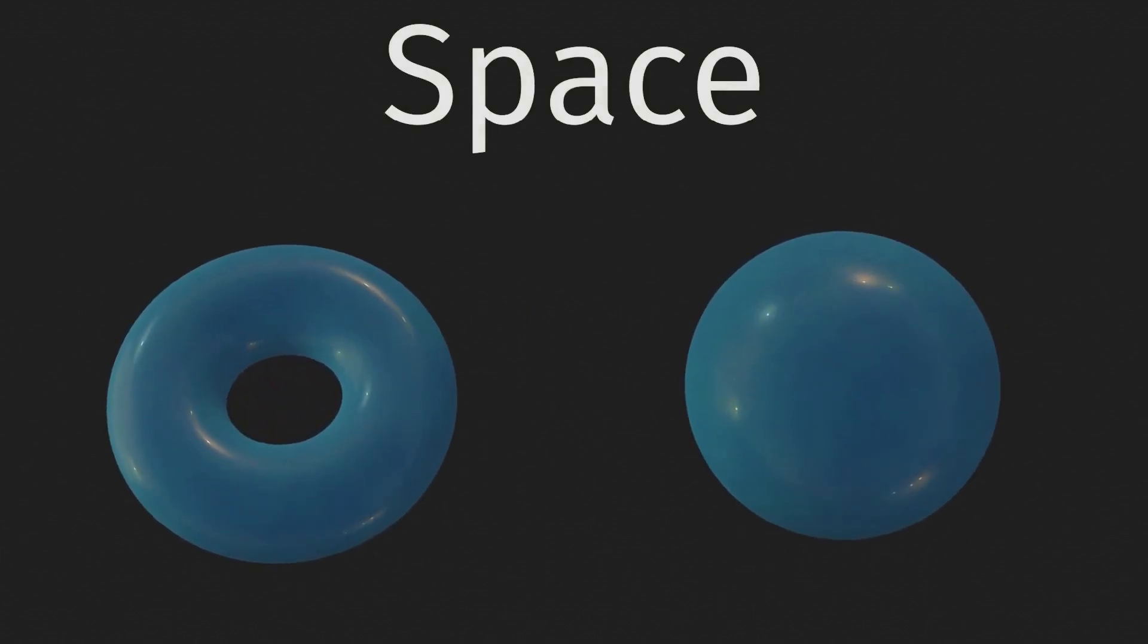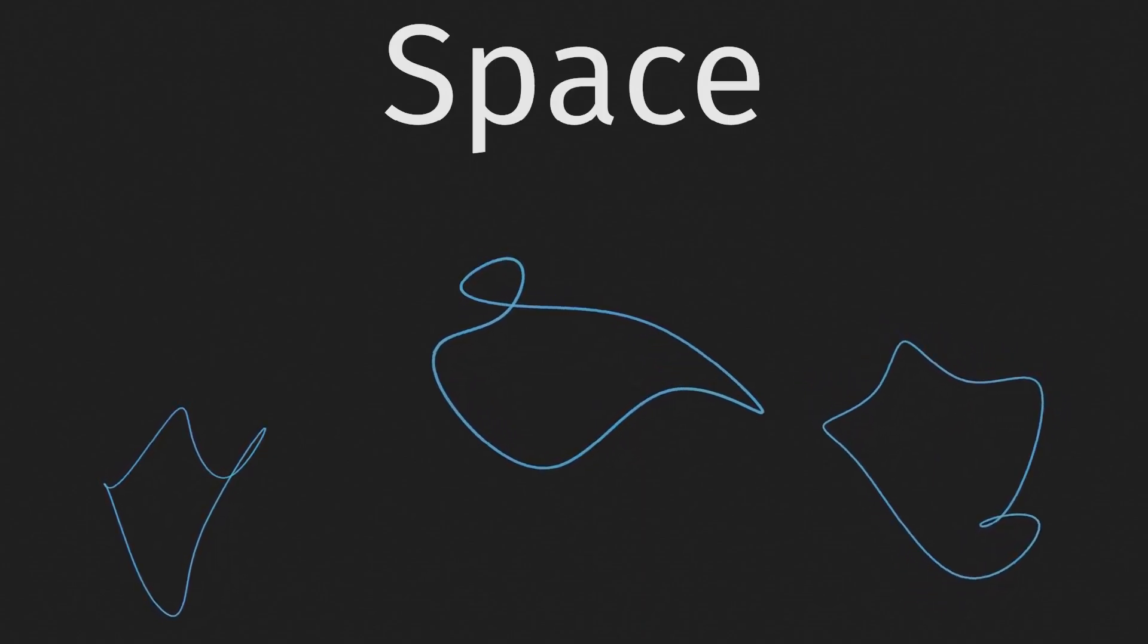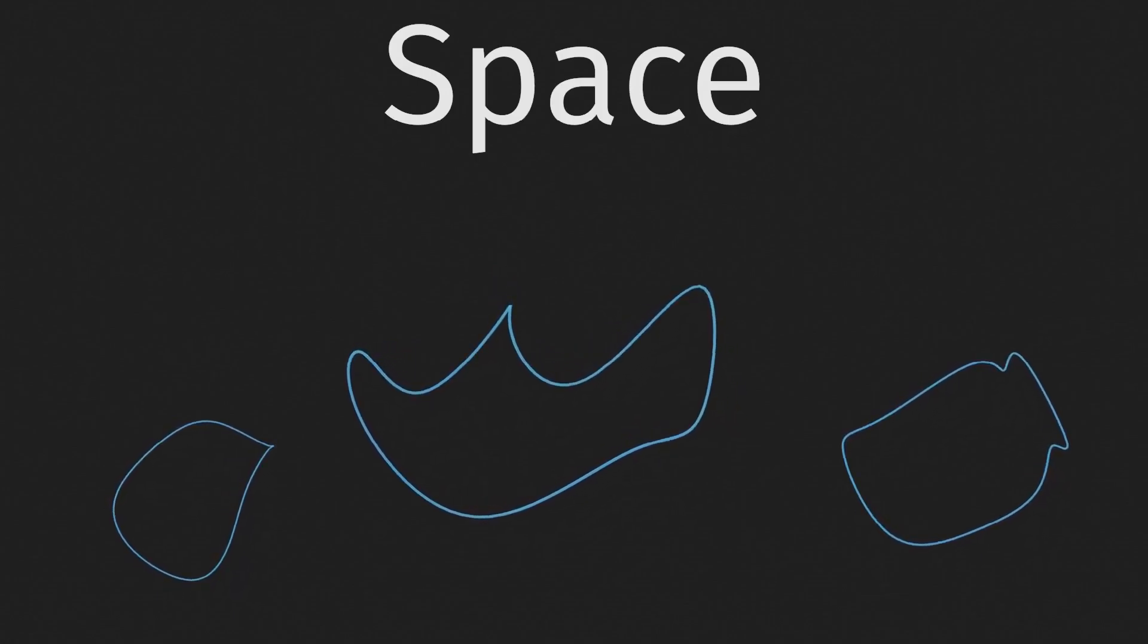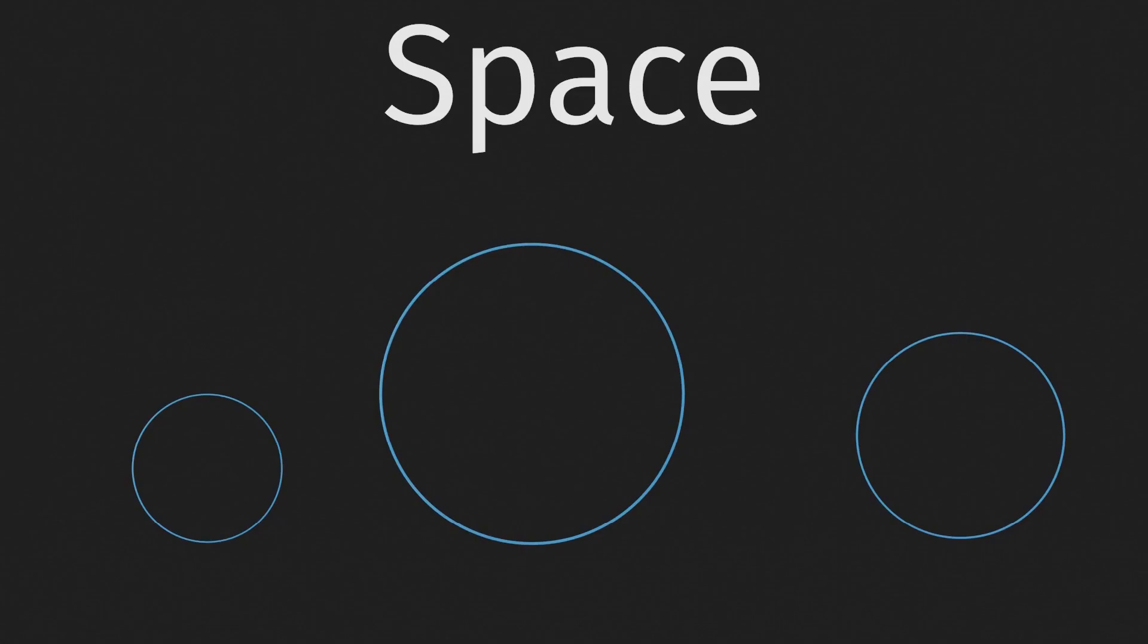We will view space as some compact manifold without boundary. In principle, this should be three-dimensional to model the world we know. This makes the theory a lot more difficult, so we will instead consider one-dimensional manifolds, as these are much simpler to work with. Indeed, one can always smoothly transform a one-dimensional manifold to a circle, or multiple copies of a circle. This gives us a description of space.